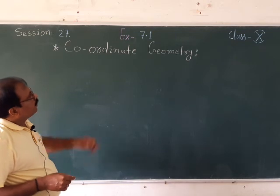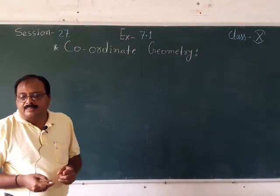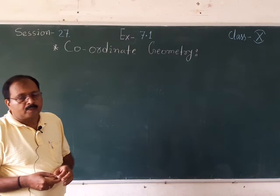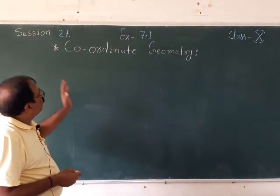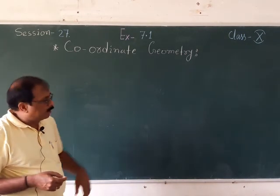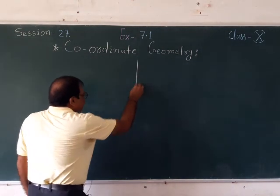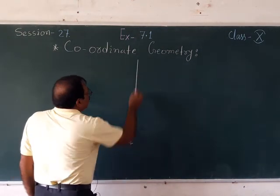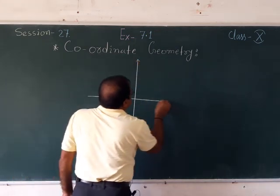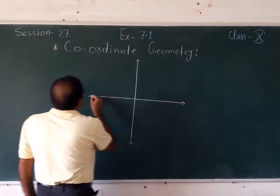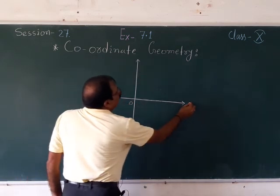Today, Chapter 7 is there in our syllabus — that is Coordinate Geometry. So this time I am going to start this chapter, Coordinate Geometry. You are already aware about the coordinate system, so let us revise something. In coordinate geometry, we are studying two-dimensional coordinate geometry — it has two dimensions.